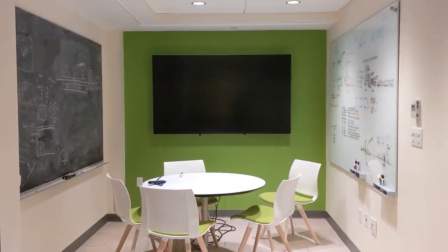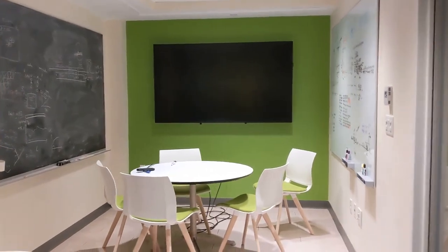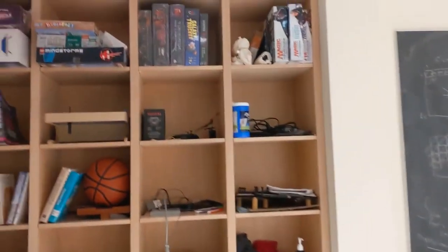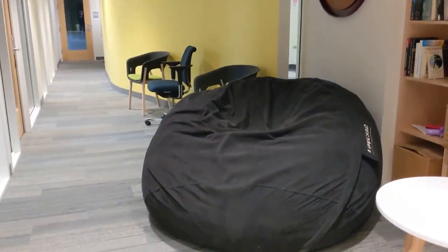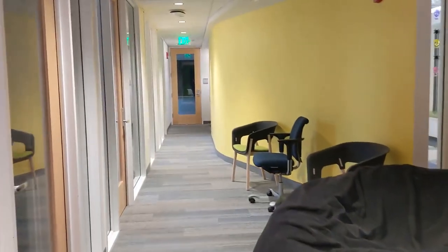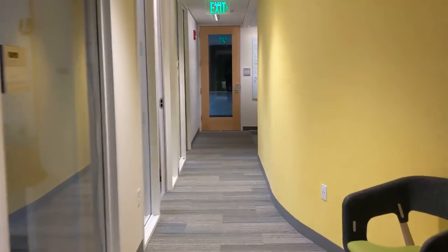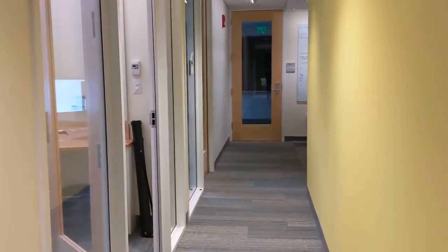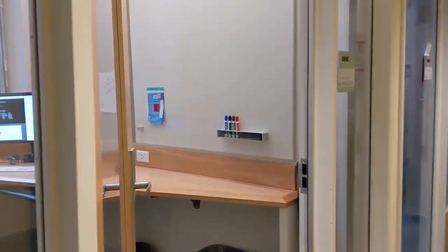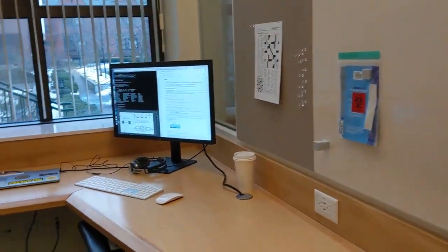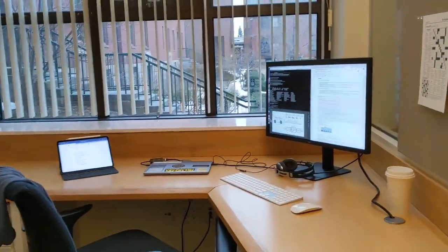Let me give you a peek into my workspace. This is the lab. We have a lot of our meetings in this space. We also have a lot of games, nerf guns, and other toys for when we want to take a break, and a giant beanbag chair. Then we have our offices on this side — each of us has our own space where we do most of our work. This is my office. I have a nice view of the volleyball court outside, and I spend most of my time coding here.